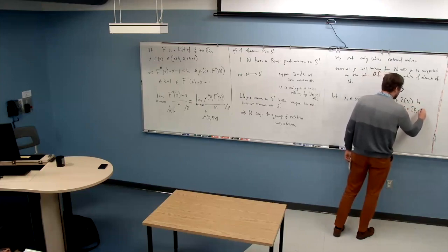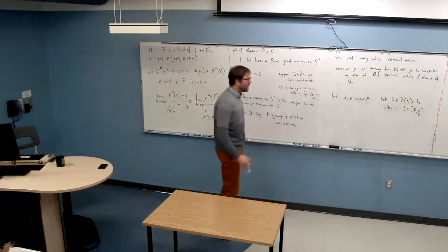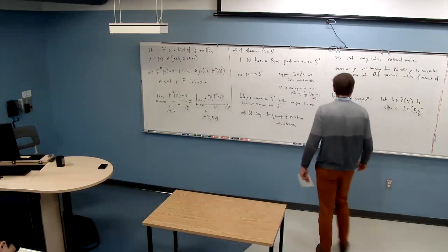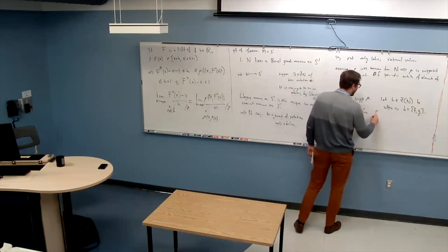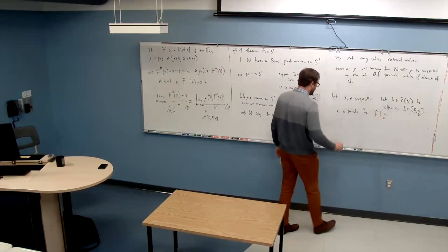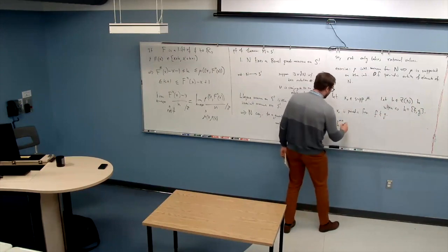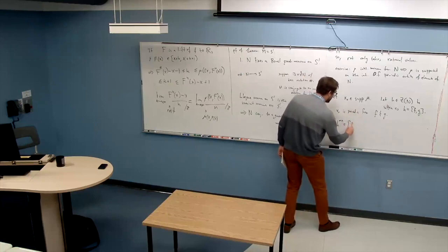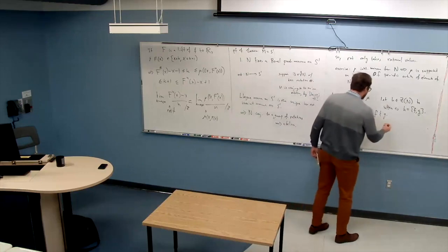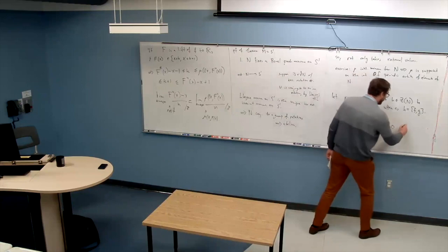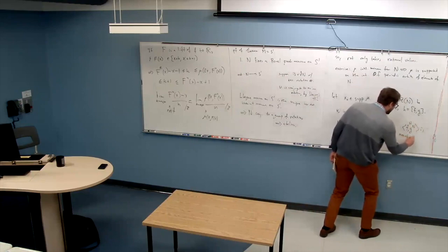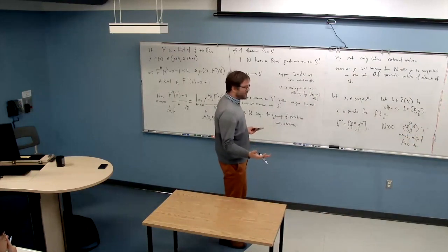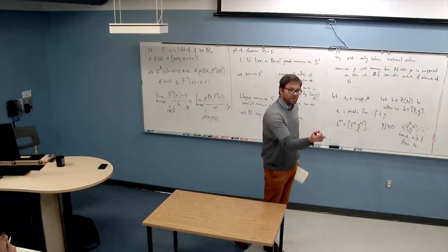Let h in the center of N be written as a commutator of two other elements of N — always possible if N is non-abelian nilpotent. Then x₀ is periodic for f and g, and for suitable large exponents m and n, the group generated by f^m and g^n is non-abelian nilpotent and fixes x₀. So I now have a non-abelian nilpotent action on the circle fixing a point.